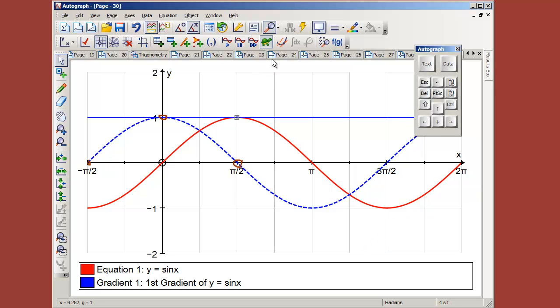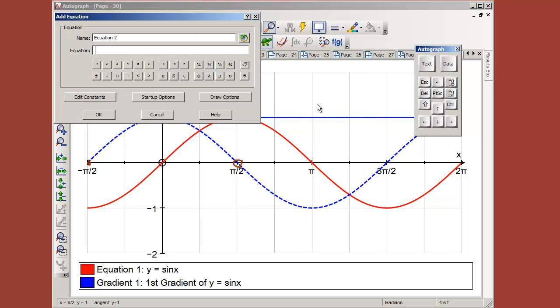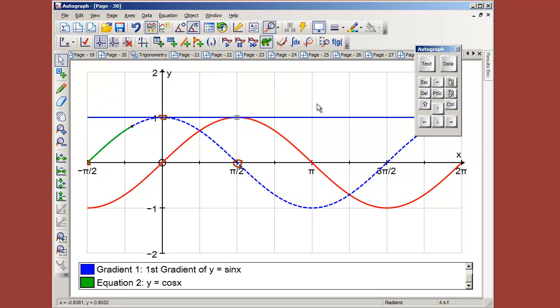And so what graph is this? And you invite suggestions, and, of course, y equals cos x is the one, but it's really nice to see it now drawing right on top of the graph that's been achieved that way.